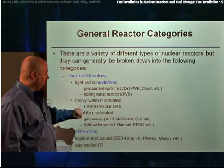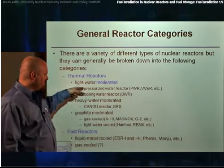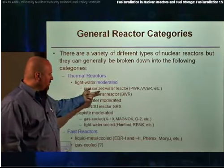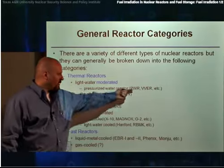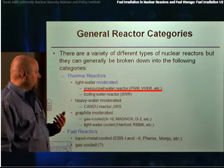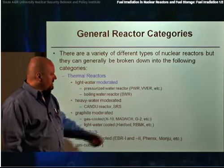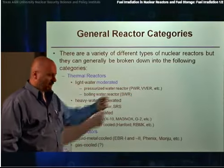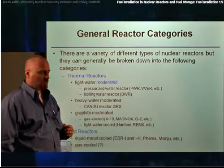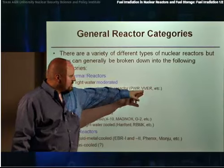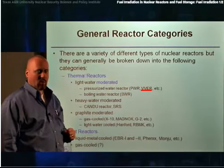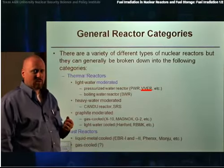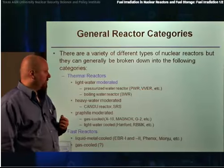Of the light water moderated reactors, there are principally two types: the pressurized water reactor and the boiling water reactor. The pressurized water reactor, or PWR, is what we principally have here in the United States, though there are also boiling water reactors in the United States as well. The Russians also have a type of pressurized water reactor called a VVR, which is generally very similar to the U.S. PWR.